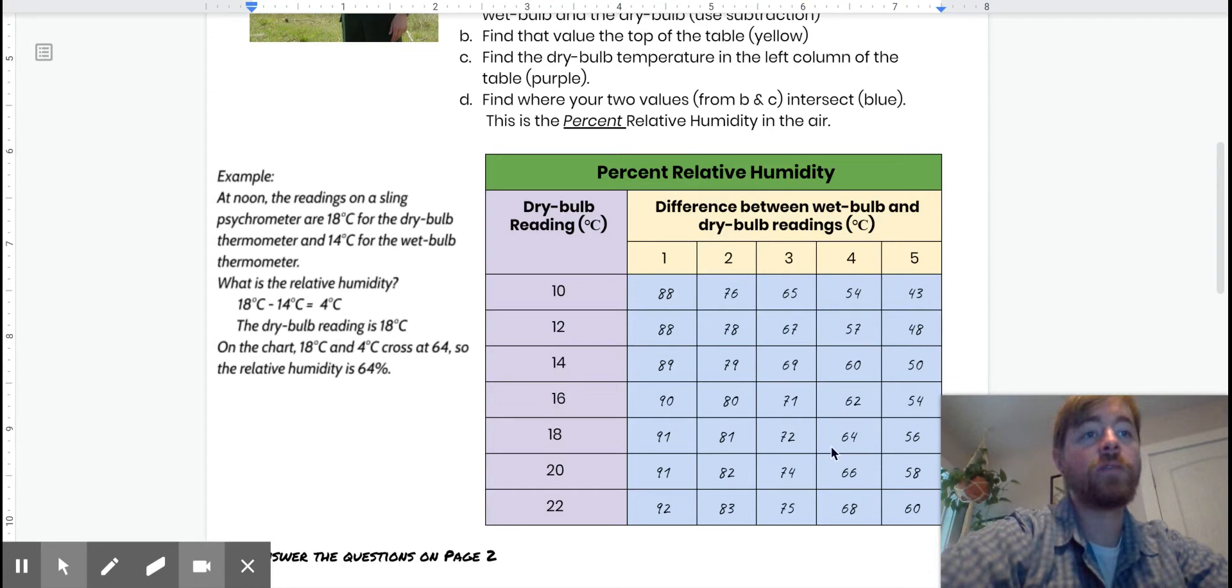Remember that warmer air can hold more water. Cooler air can't hold as much water vapor. But you could still have a 64% humidity in warm air and 64% humidity in cool air. There'll just be a different amount of actual water.